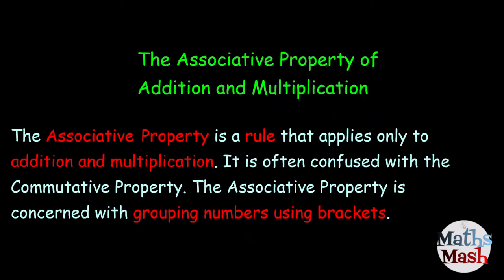So, the associative property is a rule that applies only to addition and multiplication. It's often confused with the commutative property. The associative property is concerned with grouping numbers using brackets.